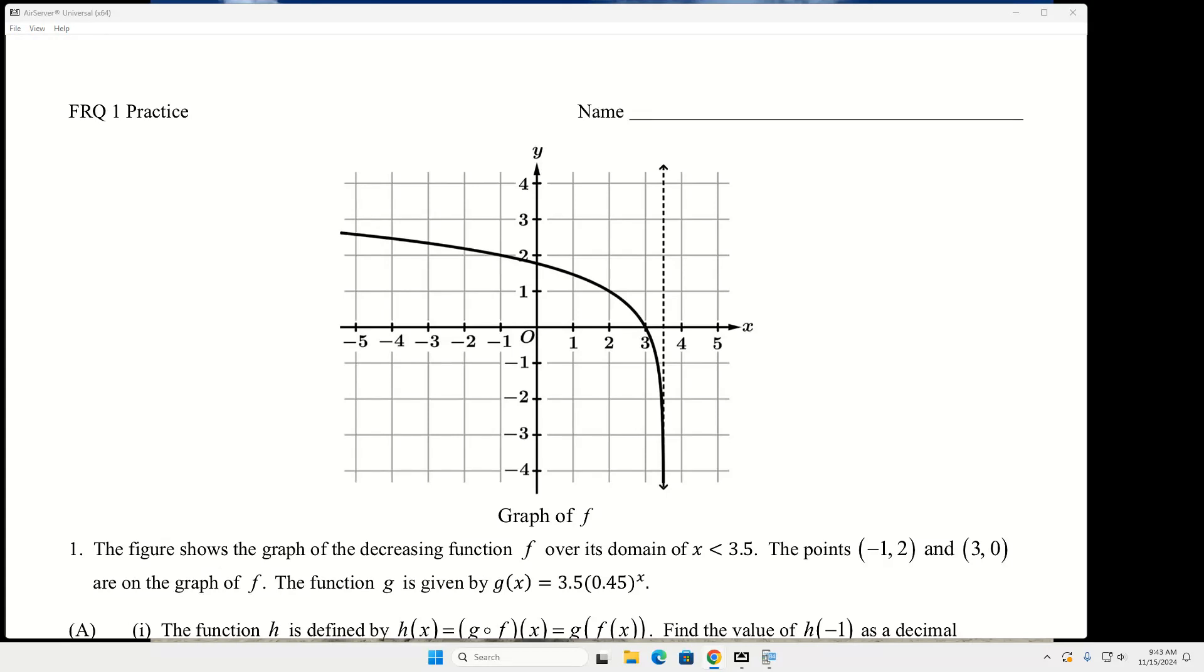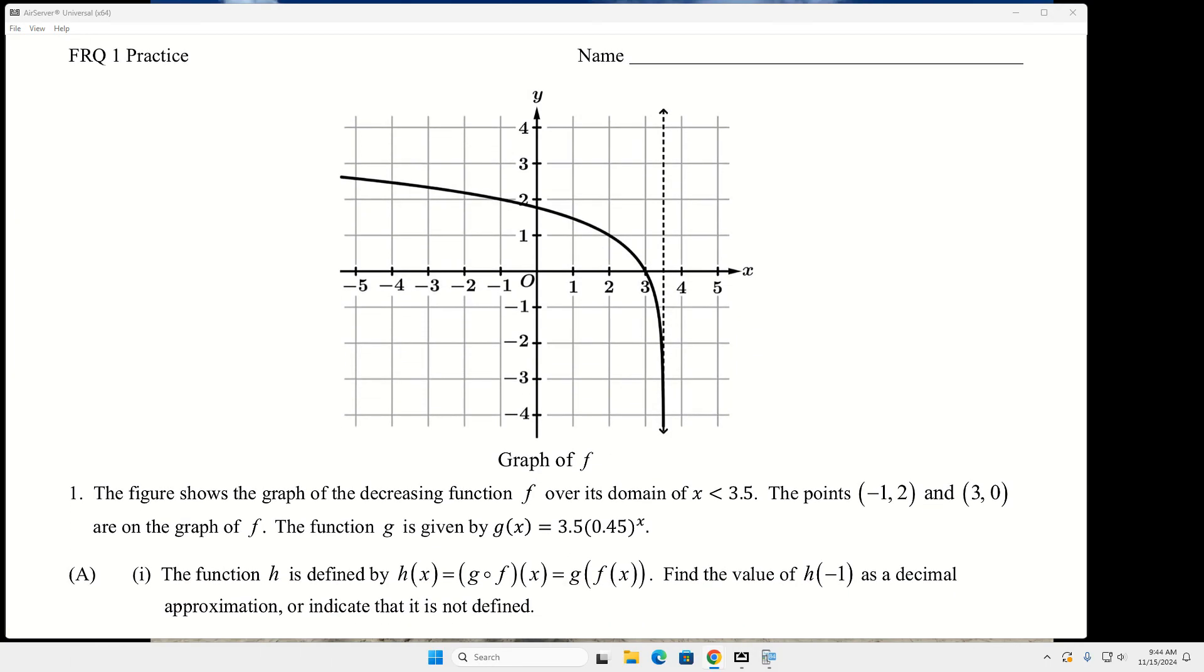All right, so when we did FRQ 1 before, instead of having a graph as your function f of x, there was a table, and then you would do the first and second differences to figure out if it was linear or quadratic. Do you remember that? And then you would say over equal length input value intervals. That's one way they could ask this question.